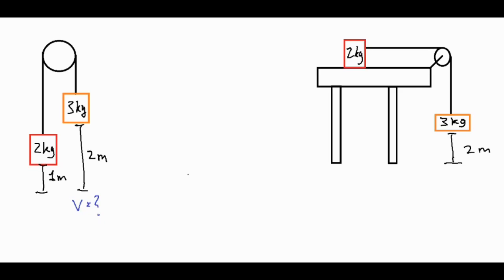You can consider that the velocity of the three kilogram, the two kilogram, or the entire system — since they're connected their velocities are going to be equivalent to each other. We're going to use the conservation of energy, taking a look at all the types of initial energy and all the types of final energy, and the sum of all of those energies for each of those blocks before and after is going to be the same.